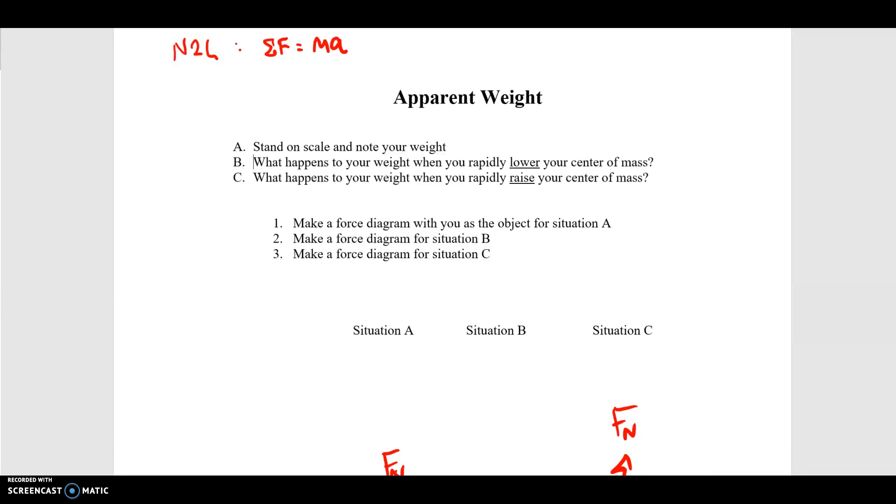In class, we did an activity called apparent weight which used Newton's second law, which we now know can be expressed this way: the sum of the forces on an object equals the mass of the object times acceleration.